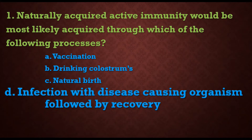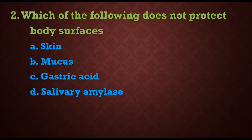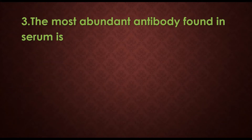The best example of naturally acquired active immunity is exposure to smallpox and some types of flu. Second question: which of the following does not protect body surfaces? Options are: a) skin, b) mucus, c) gastric acid, d) salivary amylase. The answer is d) salivary amylase, as it does not protect body surfaces.